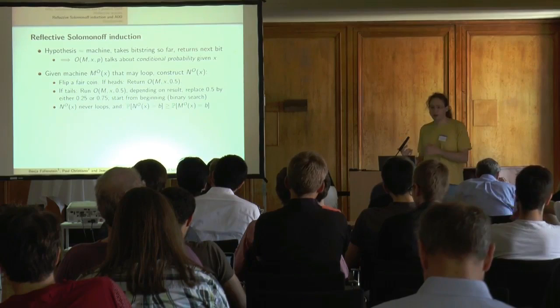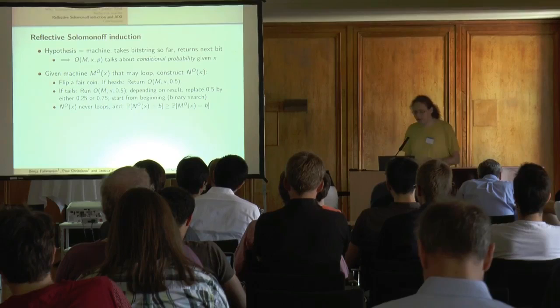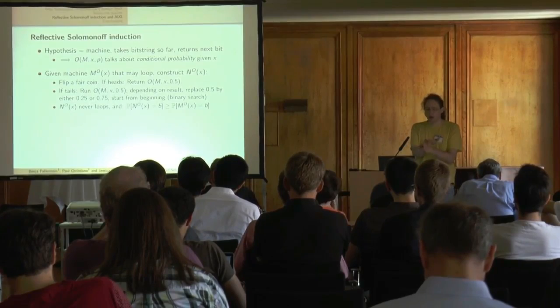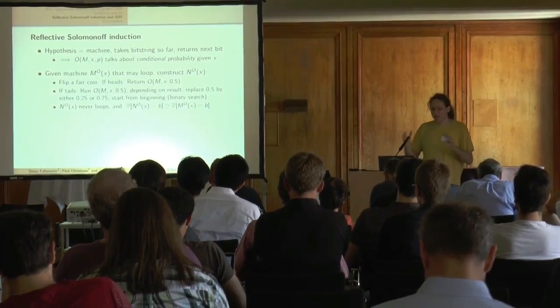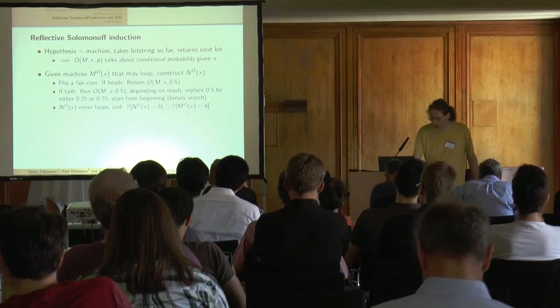For example, if M returns 0 with probability 0.4, returns 1 with probability 0.5, and loops with probability 0.1, then N can have probabilities like 0.45 and 0.55 that sum to 1. The way it works is a binary search: flip a fair coin; if heads, ask the Oracle whether the probability is greater or smaller than 0.5 and return accordingly; if tails, split the space to 0.25 or 0.75 instead, and start over. Details are in the paper.